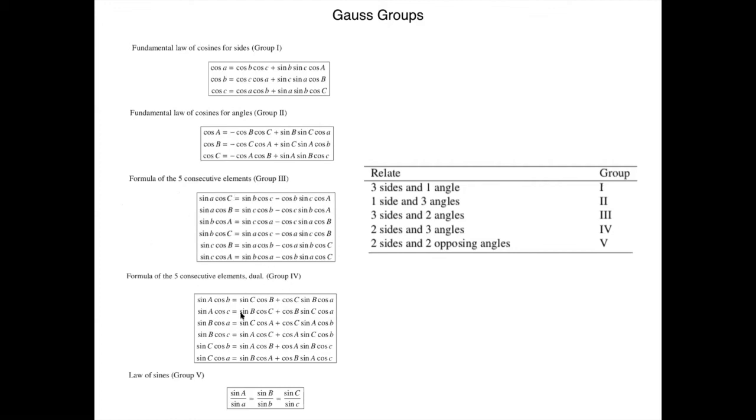Group five is the law of sines. You can choose here based on how many sides and how many angles you have given, and how you relate them, which is the group that you're going to use to solve a particular problem. With that, let's pass on then to finally applying these equations for transforming between coordinate systems.